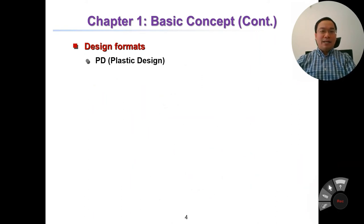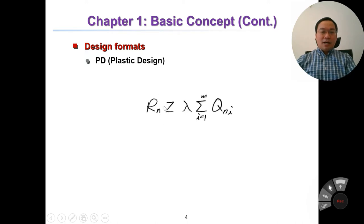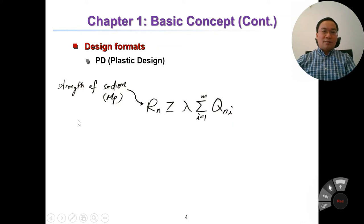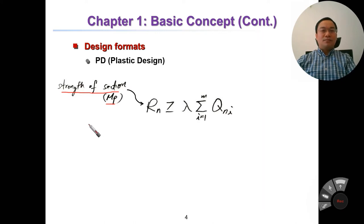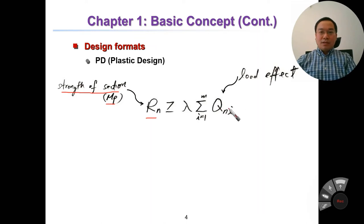The second design format is Plastic Design, PD. In PD format, the condition is Rn greater than or equal to lambda multiplied by the sum of Qni. Here Rn is the strength of the section — for example, Mp is the plastic moment, i.e., the plastic strength of the section. In the previous format it was stress, but here it is strength of the section. Lambda times Qn is the load effect, which may be the internal force like the moment of the section due to the applied load.